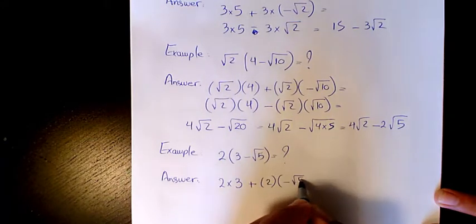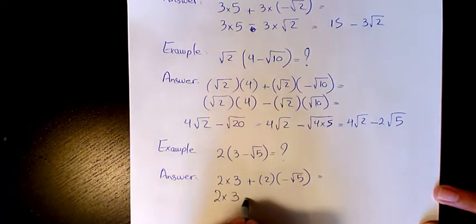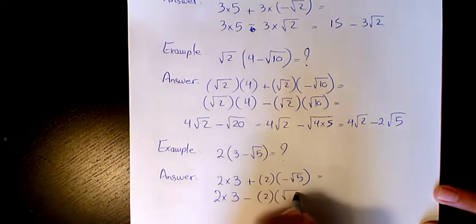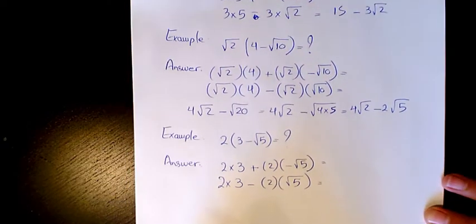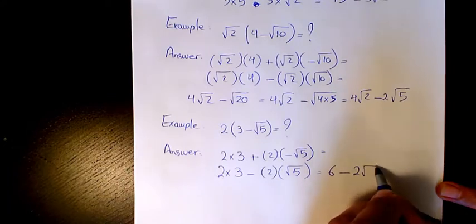Or again, 2 times 3 minus 2 times √5. Both of them are exactly the same. 2 times 3 is 6, and here we have 2√5. That's the final answer.